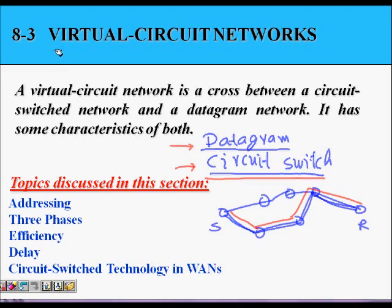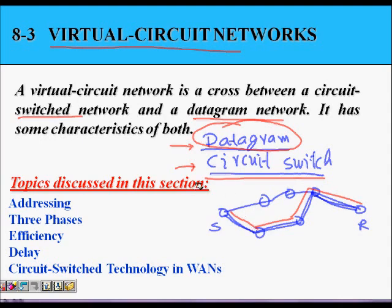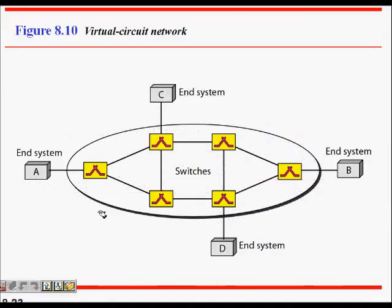There is something in between datagram and circuit switched networks, known as a virtual circuit network. A virtual circuit network is a cross between a circuit switched network and a datagram network — it has characteristics of both, aiming to get the best of both. It is based on the datagram network, but packets flowing from source to destination follow the same path. There are three phases: call setup phase, data transfer phase, and teardown.